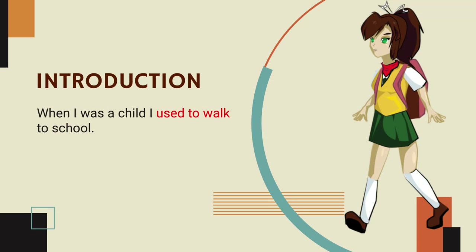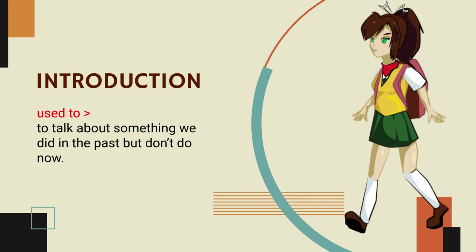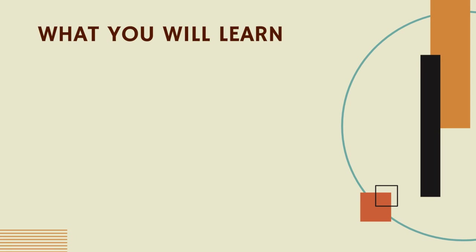When I was a child, I used to walk to school. It's in the past. You use 'used to' to talk about things you did when you were younger, or things you normally did, but don't do anymore. I don't walk to school anymore — I cycle. But when I was a child, I used to walk to school.